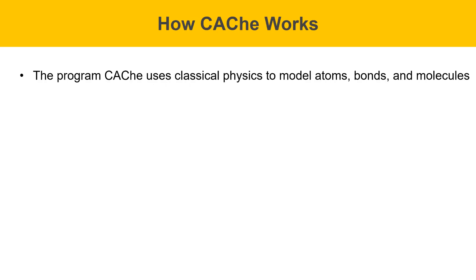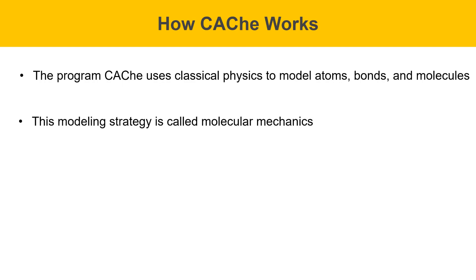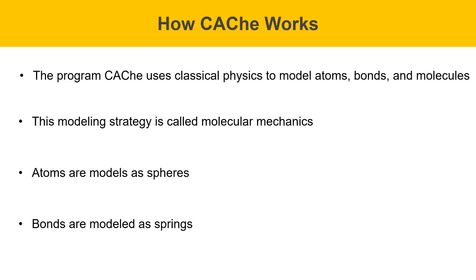The program CASH works by using classical physics to model atoms, bonds, and molecules. This modeling strategy is called molecular mechanics. It's one of several different strategies that can be used to model the behavior of molecules using computers. Atoms are modeled as spheres, and bonds are modeled as springs. This actually works really well for describing energies of conformations in organic molecules, and that's what we're going to be doing today.